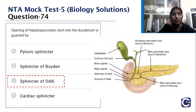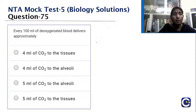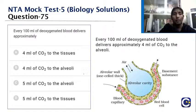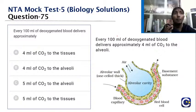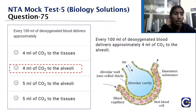Every 100 ml of deoxygenated blood delivers approximately how much CO₂ to the alveoli — 4 ml or 5 ml? Every 100 ml of deoxygenated blood delivers 4 ml of CO₂ to the alveoli. Conversely, every 100 ml of oxygenated blood delivers 5 ml of O₂ to the tissues. The answer is 4 ml of CO₂ to the alveoli.